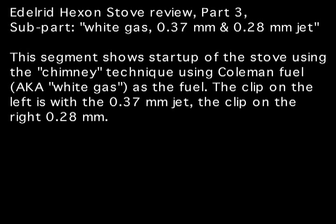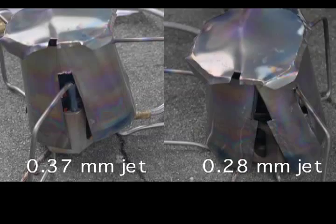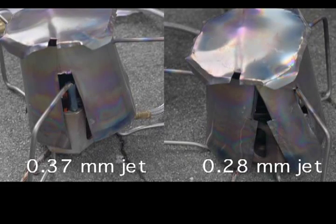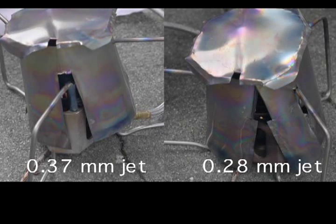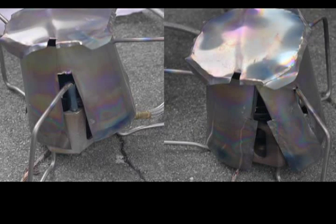I have several segments on this particular stove, the Edelrid Hexon stove. This particular video clip is showing the stove running on white gas Coleman fuel, showing side-by-side the slight differences in the flame properties